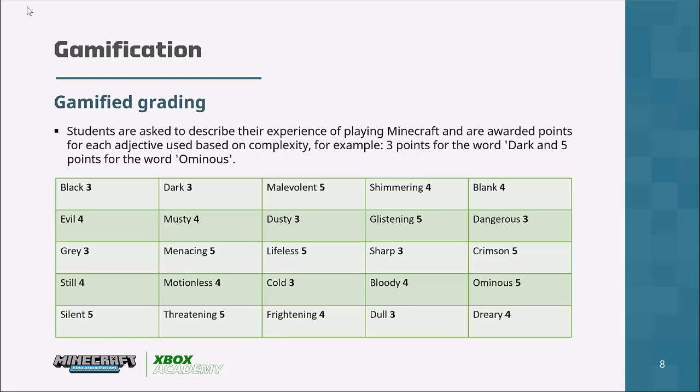The first one I'll explore is gamifying grading. This is an example I borrowed from a previous colleague, an English teacher. When issuing a writing task, she would gamify the grading by applying values to different words based on complexity. If a child used the word 'dark,' 'dull,' or 'gray,' they received three points. But if they used a more complex word like 'threatening' or 'malevolent,' they'd get five points. At the end, they tally the scores and compare against the previous session.